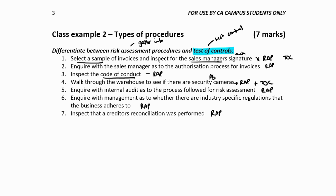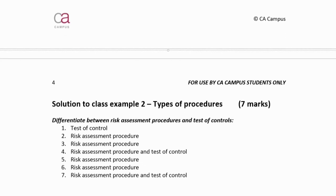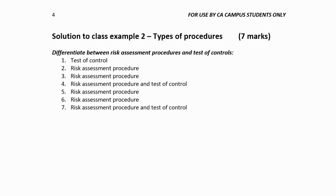Inspecting the creditors reconciliation can also be seen as a test of control, because you are testing the creditors reconciliation itself. So looking at the solution, there are a couple of procedures that are classified as both, and the rest are either one or the other.